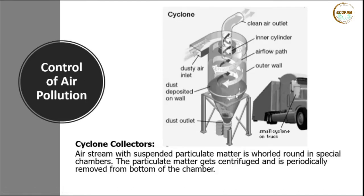Cyclone collectors create a vortex effect. When dirty gas is passed in, it creates a cyclone pattern, and through centrifugal force the heavier particles get stuck to the walls of the cyclone chamber. The clean gas exits from the top while particulate matter is collected in a hopper at the bottom. The circular motion creates centrifugal force that makes heavier particles settle down and allows clean air to exit from the top.